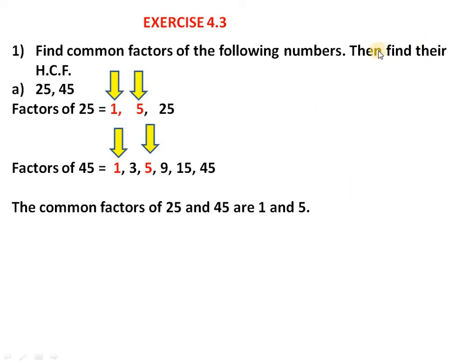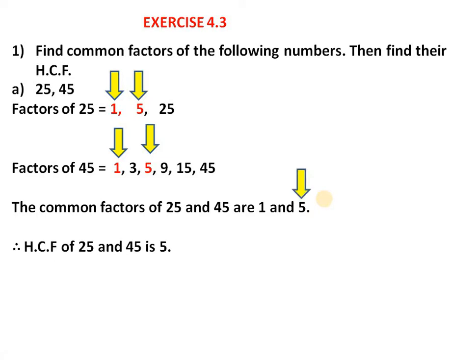Now for the second part of this question, we find the HCF. Once you have the common factors, find the highest among them. Between 1 and 5, clearly 5 is the highest. Therefore, HCF of 25 and 45 is 5.